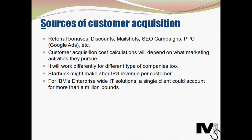The model works differently for different companies. For instance, a company like Starbucks might make about £8 revenue per customer and can have a very high volume of customers. Whereas a division of a company like IBM that provides enterprise-wide IT solutions — a single client could account for more than a million pounds worth of pure revenue after taking all costs out of the equation. The considerations become quite different depending on what your company does.